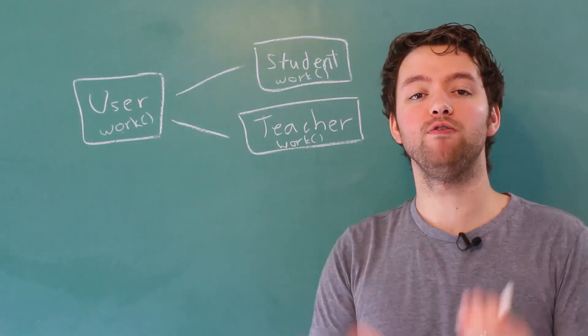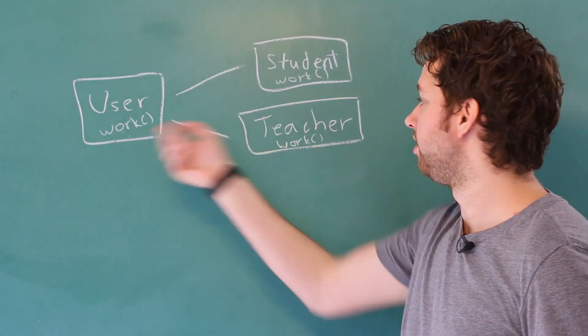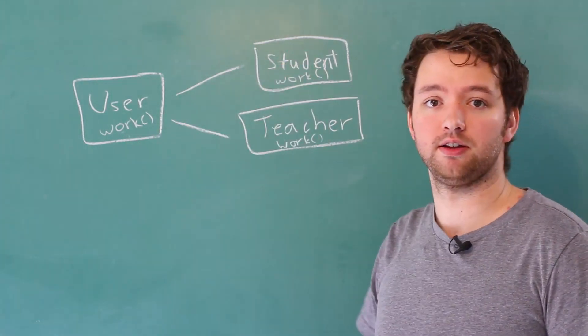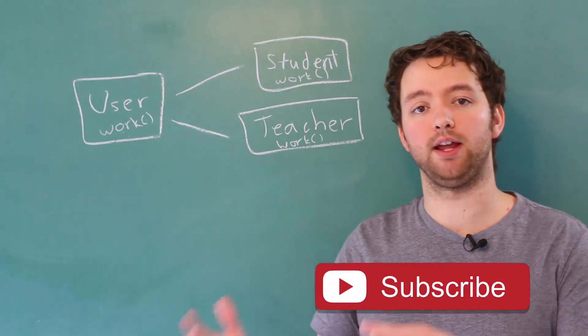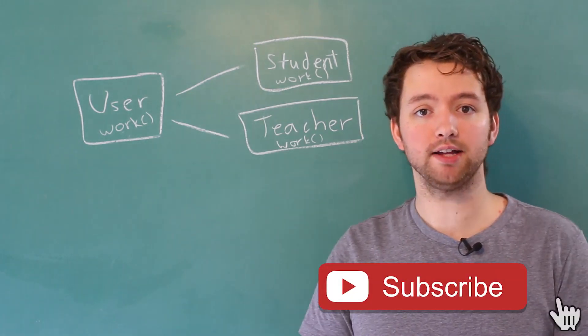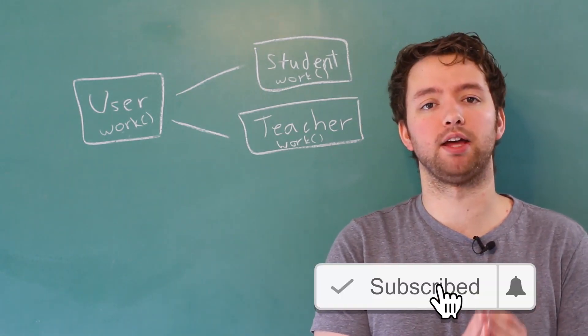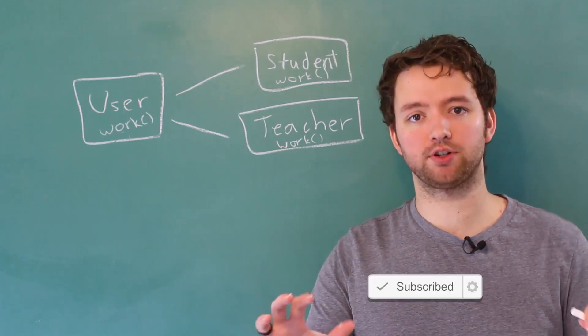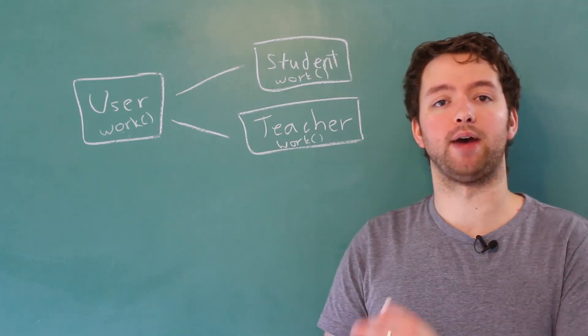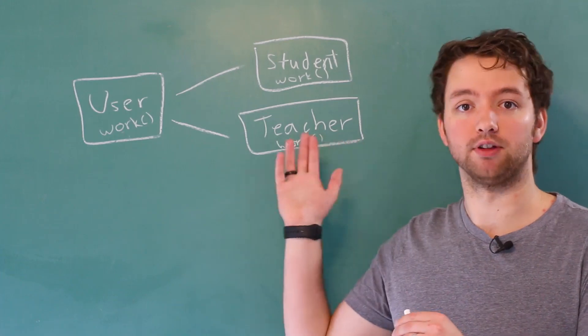So we can actually override this work method inside a teacher and student. Now you don't have to do anything fancy to override a method in a derived class. You just have to put that same method so the signatures have to match in the derived class, and it will automatically invoke the derived class version.